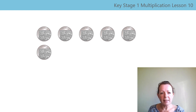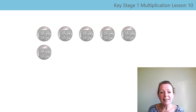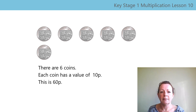What is the value of this set of coins? Pause the video while you work it out. That's right, it's 60p. Let's say those stem sentences together: there are six coins, each coin has a value of ten-p, this is 60p.